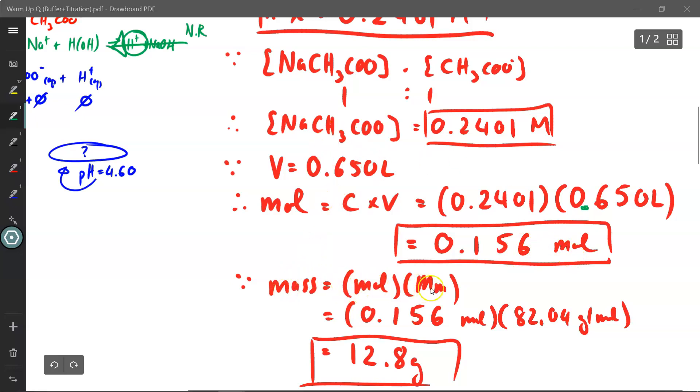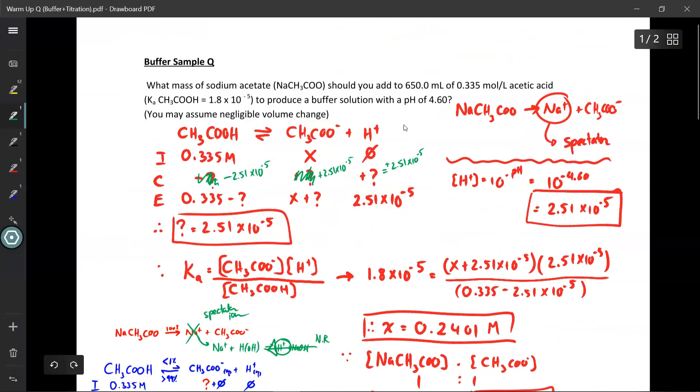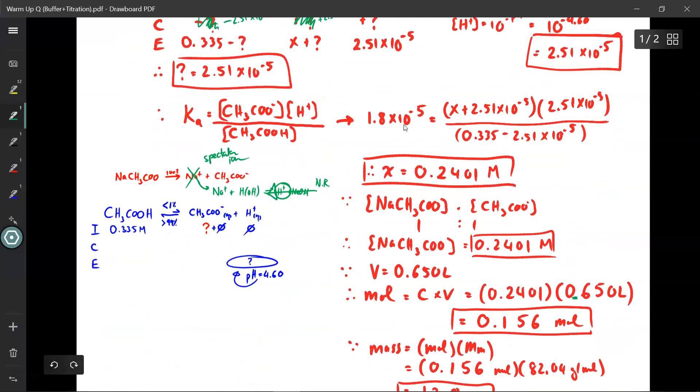From there, mass is equal to moles times molar mass. There's my moles, 0.156 moles. The molar mass of sodium acetate is 82.04 grams per mole. We can find this on the periodic table. Multiply the two and we need to have 12.8 grams of sodium acetate dissolved in the solution in order to achieve a buffer solution pH of 4.6 in the end.